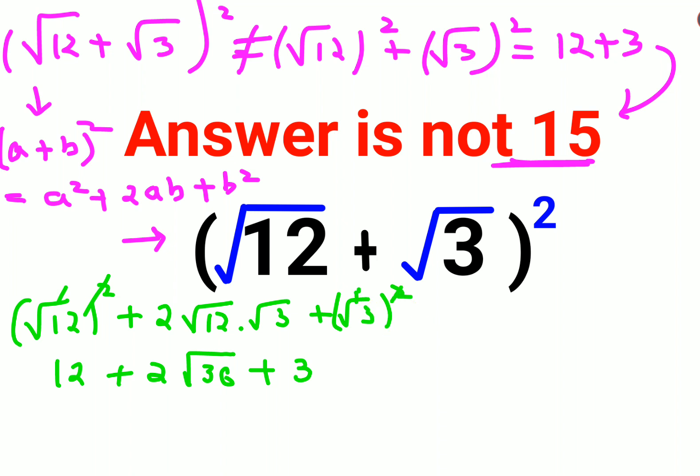Now we can add 12 plus 3, which gets you 15, plus 2 times the square root of 36. The square root of a positive number like 36 can be written as just 6. So we have 15 plus 12, and the answer comes out to be 27 for this question.